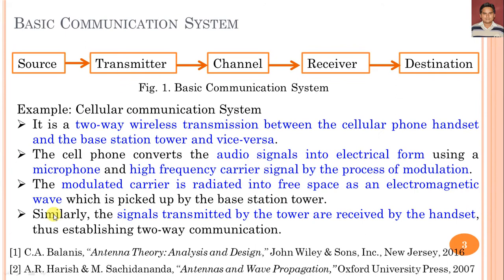As we know that in a basic communication system, there are 5 components: initially the source, then transmitter, channel, receiver, and destination. So we can say this is the process of a basic communication system.